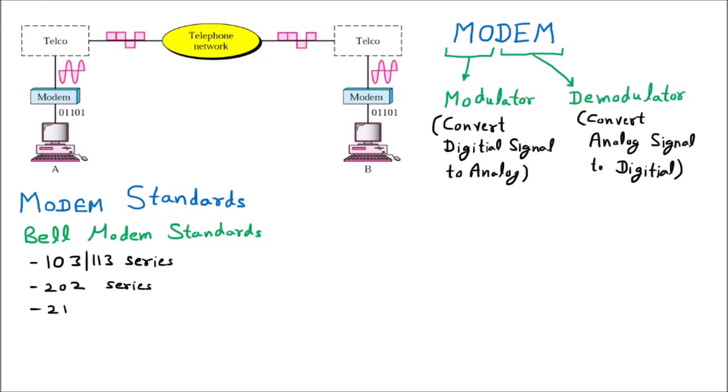Next one is the 212 series, further is the 201 series, then 208, and the next one is 209. So in the Bell modem we have different series: 103, 202, 212, 201, 208, and 209. These are the series of the modem — the names we have to learn; the types we will discuss afterward.